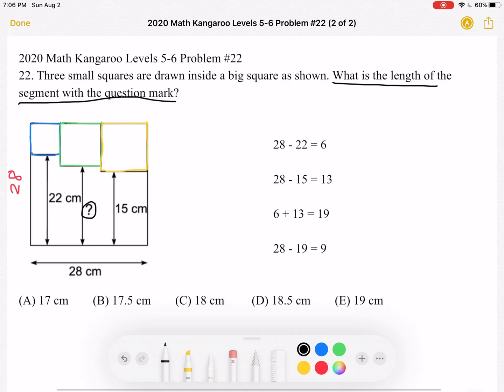Because 28, the length of the big square, is equal to the question mark plus the side length of the green square. So if we find the side length of the green square, we can subtract that side length from 28, and we will find our question mark.